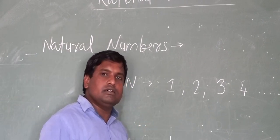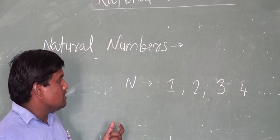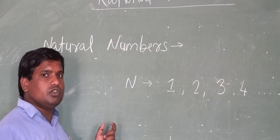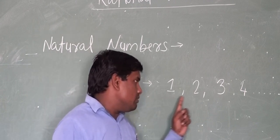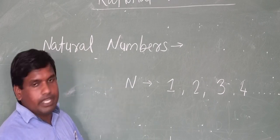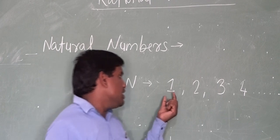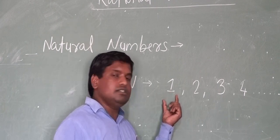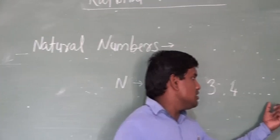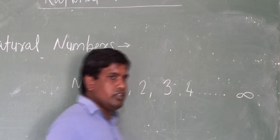Why is 0 not a natural number? Because 0 cannot be counted, so 0 is not a natural number. 1 is countable, 2 is countable, 3 is countable. So all counting numbers are called natural numbers. The smallest natural number is 1, and the greatest natural number is infinity, which means it is not defined.